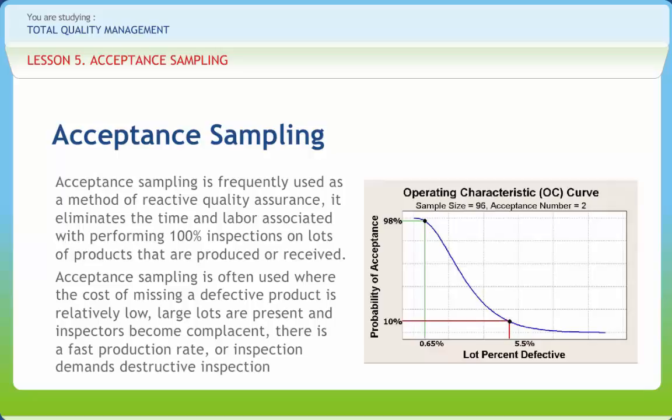Acceptance Sampling will require the selection of a sampling plan. Sampling plans are used to make product disposition decisions. A sampling plan will determine the size of a sample and the number of defectives permitted in the sample, which determines the acceptance or rejection of the population.